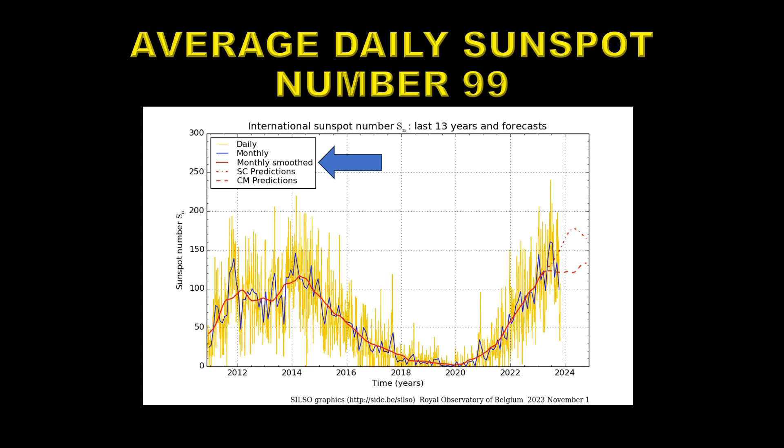You'll notice that the smooth sunspot number actually went up a little bit. That's because the smooth sunspot number is the average of 13 consecutive months, and 99 was much higher than the sunspot number from 14 months ago, so that increased the overall smooth sunspot number.